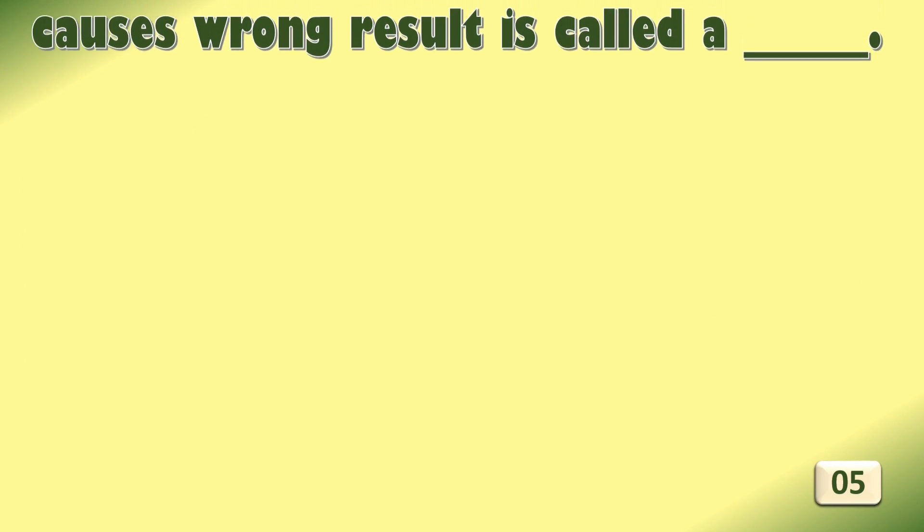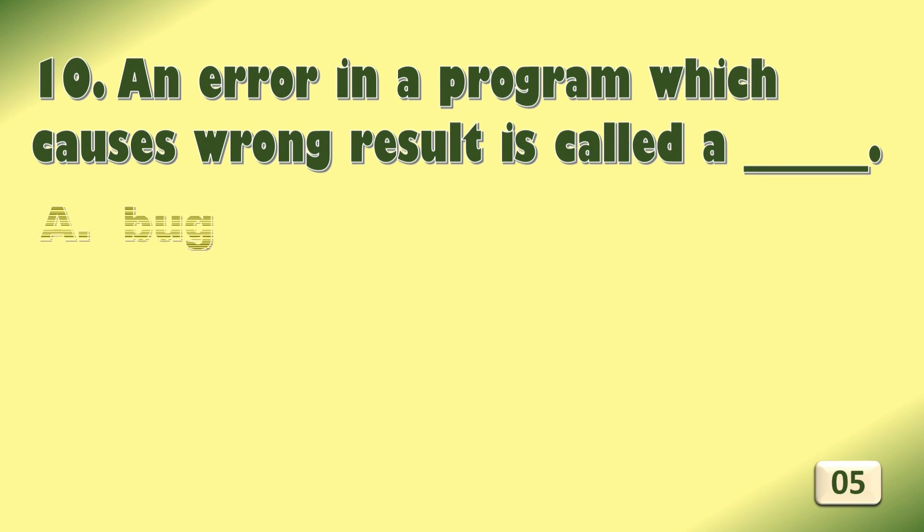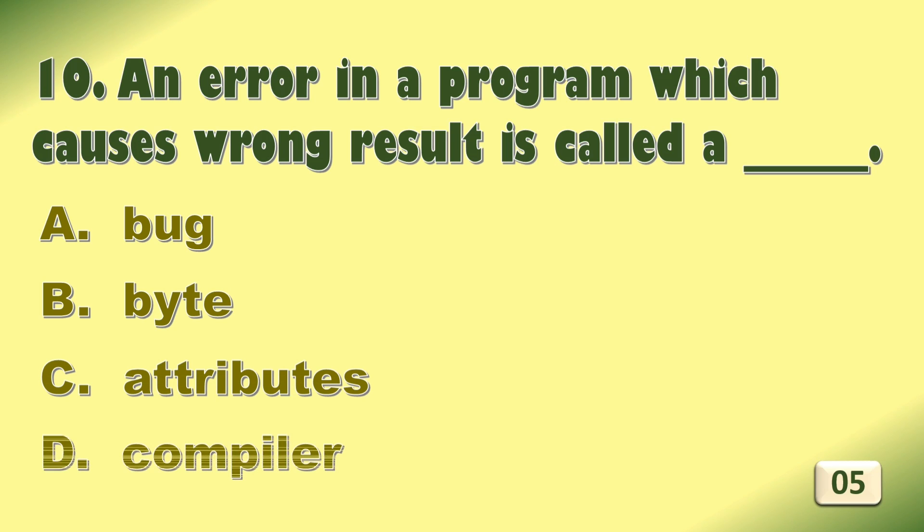An error in a program which causes wrong result is called Option A. Bunk, Option B. Byte, C. Attributes, or D. Compiler.